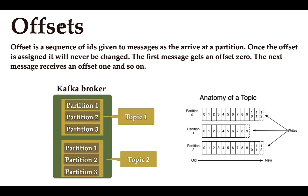What is an offset? An offset is a sequence of IDs given to messages as they arrive at a partition. Once an offset is assigned, it will never be changed. The first message gets offset 0, the next receives offset 1, and so on. For example, in partition 0, partition 1, and partition 2, sequence IDs are assigned to each message — these are called offsets, and they start from 0, 1, 2, 3, and so on.